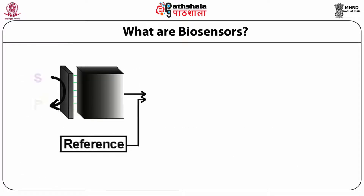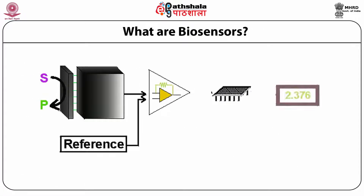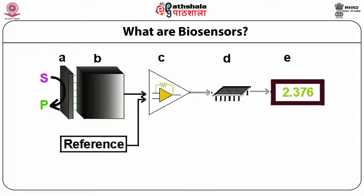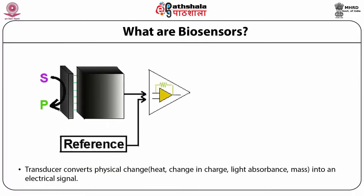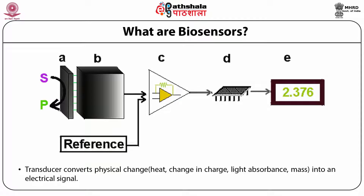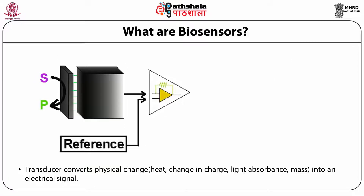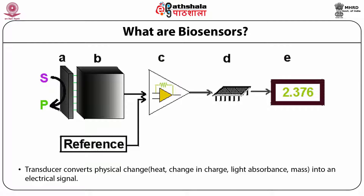Biosensors are also useful techniques to identify protein-protein interactions. The transducer converts any physical change — such as heat, change in charge, light absorbance, or mass — into an electrical signal. This physical-to-electrical signal conversion is what defines a biosensor, making it a useful technique to identify protein-protein interactions.